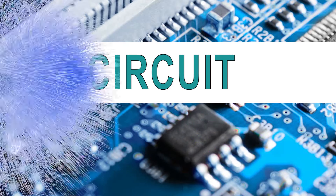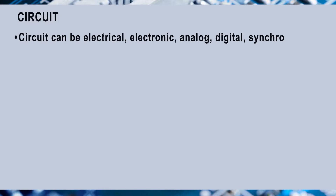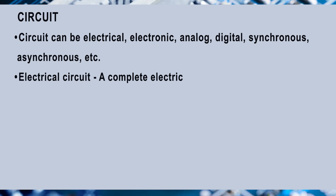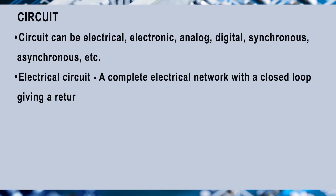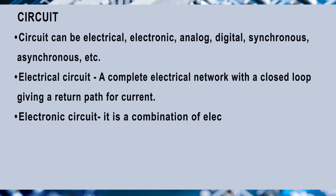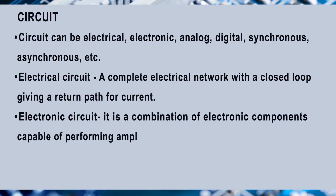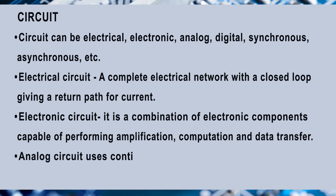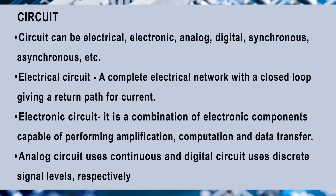Next, we will see what a circuit is and its types. A circuit can be electrical, electronic, analog, digital, synchronous, asynchronous, etc. An electrical circuit is a complete electrical network with a closed loop giving a return path for current. An electronic circuit is a combination of electronic components capable of performing amplification, computation and data transfer. Analog circuits use continuous signals and digital circuits use discrete signal levels.